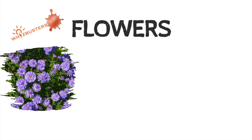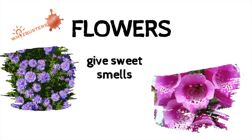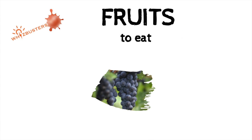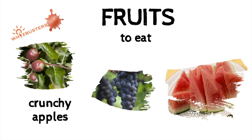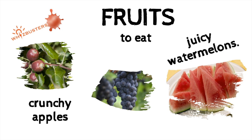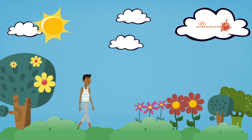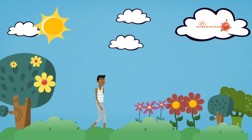Many plants have flowers, which give sweet smells and beautify our homes. Plants also give us fruit to eat, like crunchy apples and juicy watermelons. So next time you take a walk outside and see plants, observe how their stems, leaves, flowers, and roots differ.